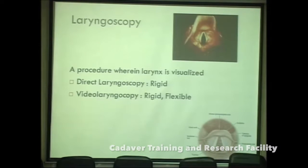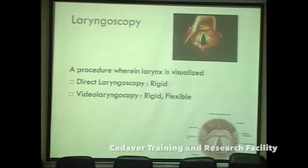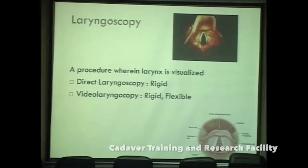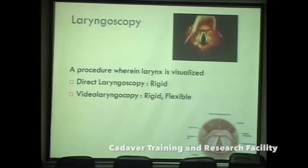This is the target structure we are aiming at. This is the epiglottis, and these are the vocal cords along with the vestibular folds, piriform recess, and cartilages — the cuneiform and corniculate cartilages. This is what we see on an optimal laryngoscopy view.